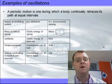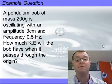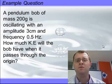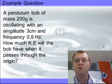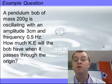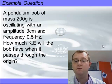I'll give you an example question now, just to wrap this up. A pendulum bob of a mass of 200 grams is oscillating with an amplitude of 3 centimeters and a frequency of 0.5 hertz. How much kinetic energy will the bob have when it passes through the origin? What's the kinetic energy? I'll give you a moment to try and calculate that. Pause this if you need to.